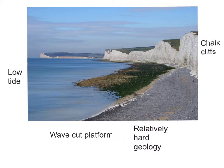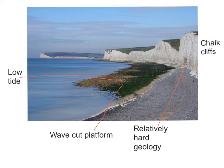A typical question about this photograph is: is the photo taken at high tide or low tide? How can you tell? You can see it's low tide because the wave cut platform is visible here — this would be covered at high tide. You only get a wave cut platform with a harder geology, and in this case the harder geology are the chalk cliffs behind.